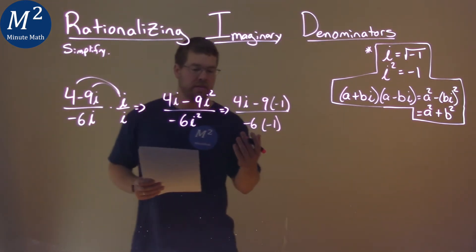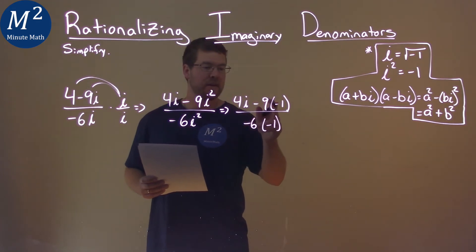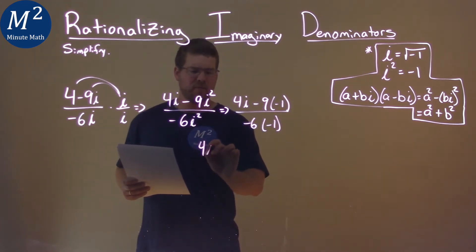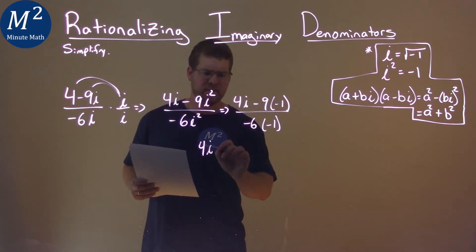Well, now we have to simplify this. 4i minus 9 times negative 1, well, that's a negative 9. And we have 4i, minus a negative 9 is plus 9, over negative 6 times negative 1, positive 6.